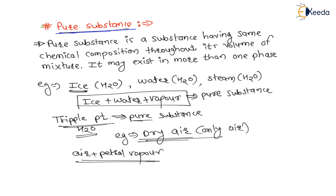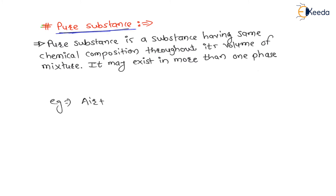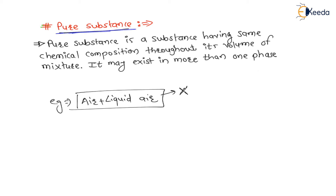Now let us understand what are not pure substances. For example, air plus liquid air is not a pure substance, because the composition is not chemically homogeneous — the same chemical composition is not maintained throughout.